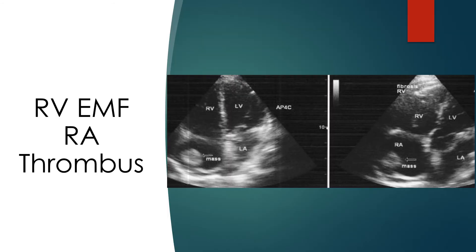The grossly dilated right atrium causes stasis of blood, which often leads to thrombus formation in the right atrium, as shown here from another case. The thrombus can be either mobile or adherent to the atrial wall. A mobile thrombus can embolize, producing pulmonary embolism and its sequelae, sometimes presenting as pulmonary hypertension.